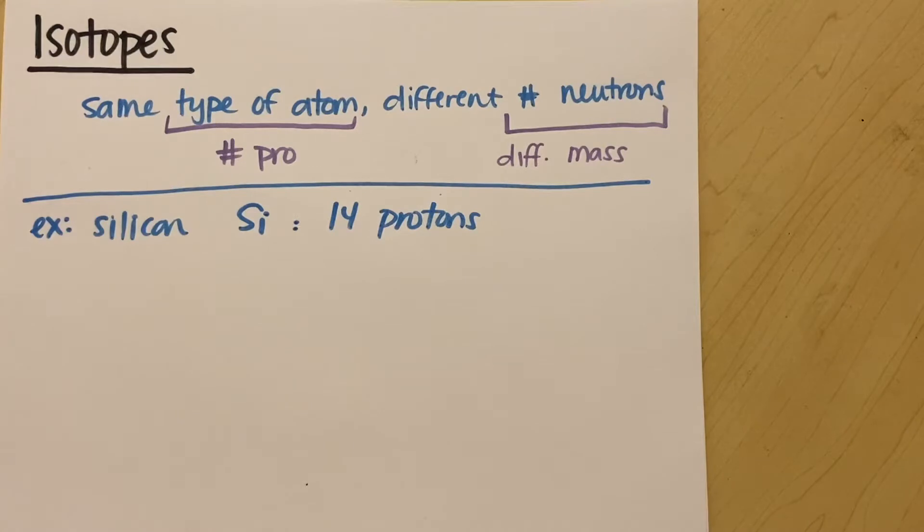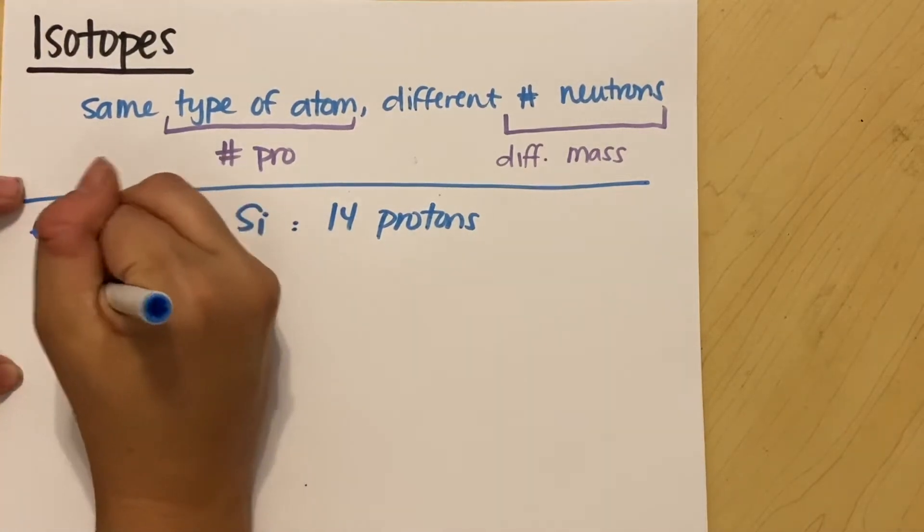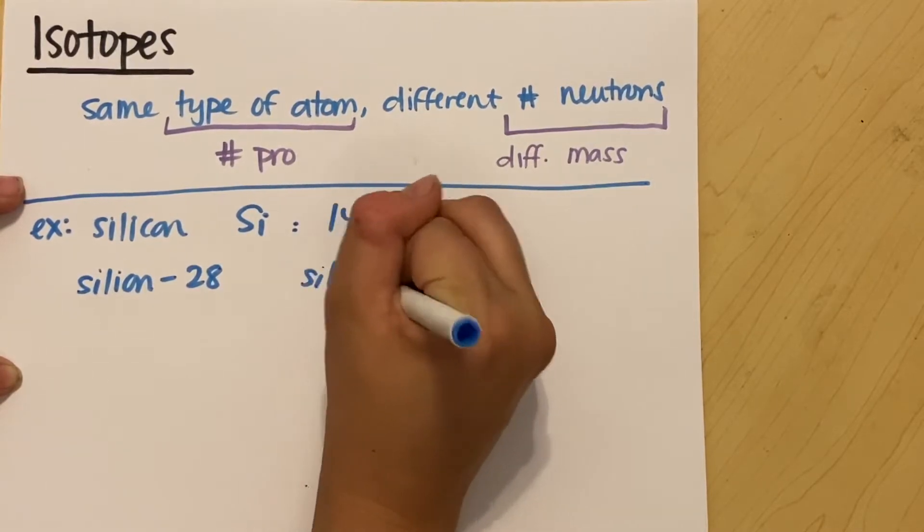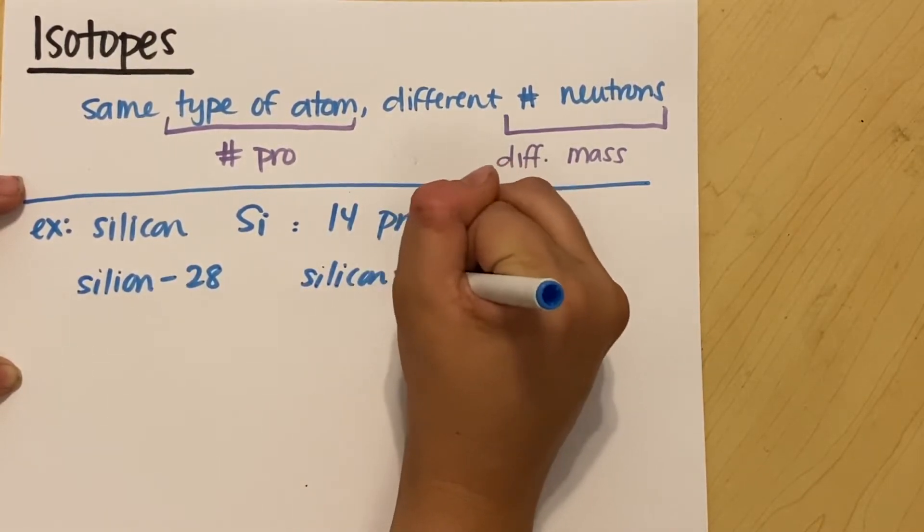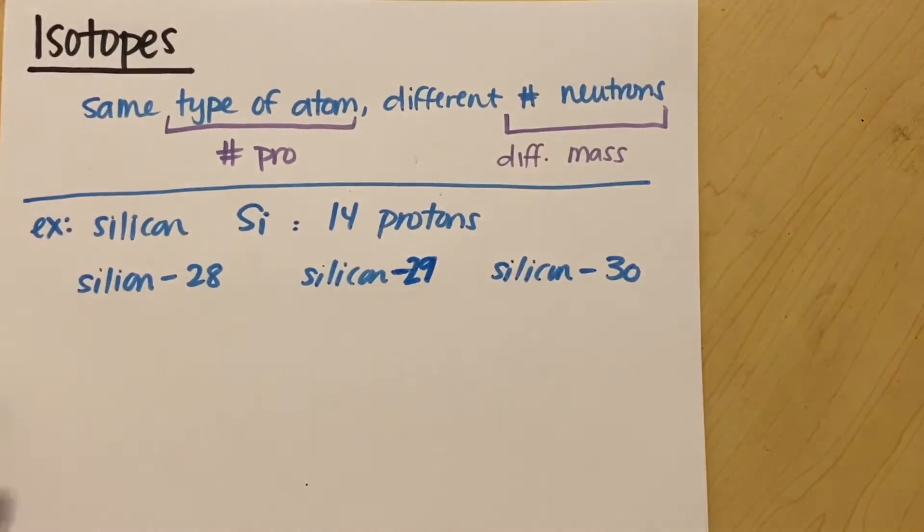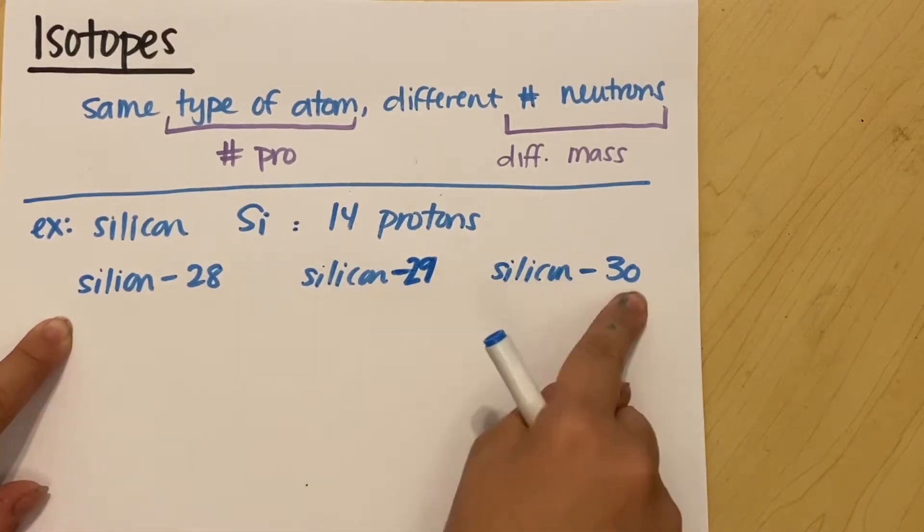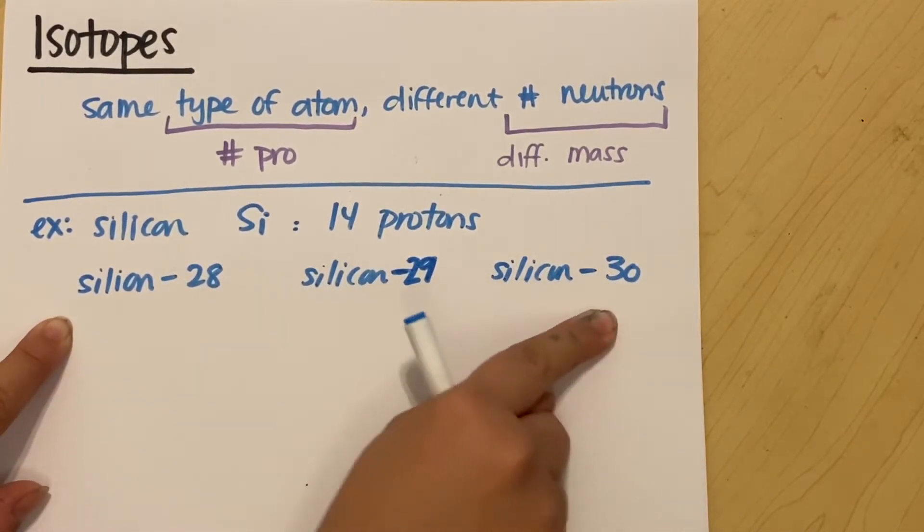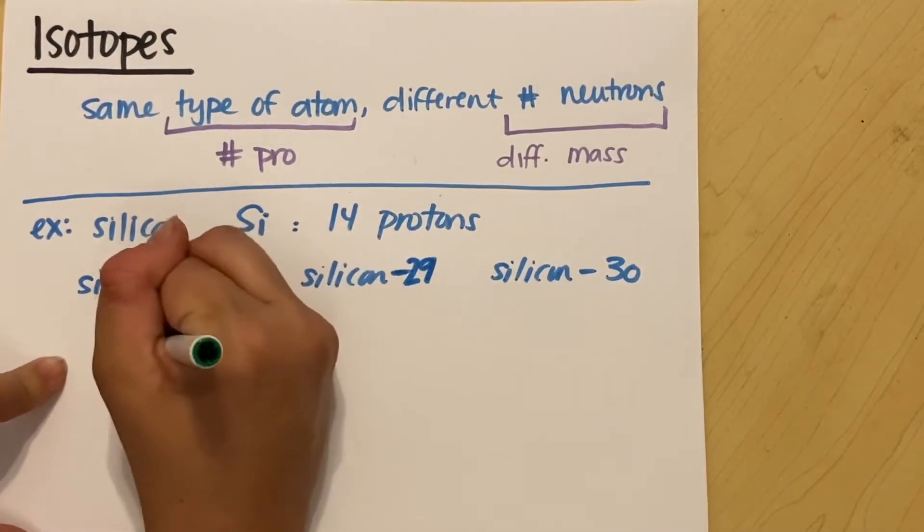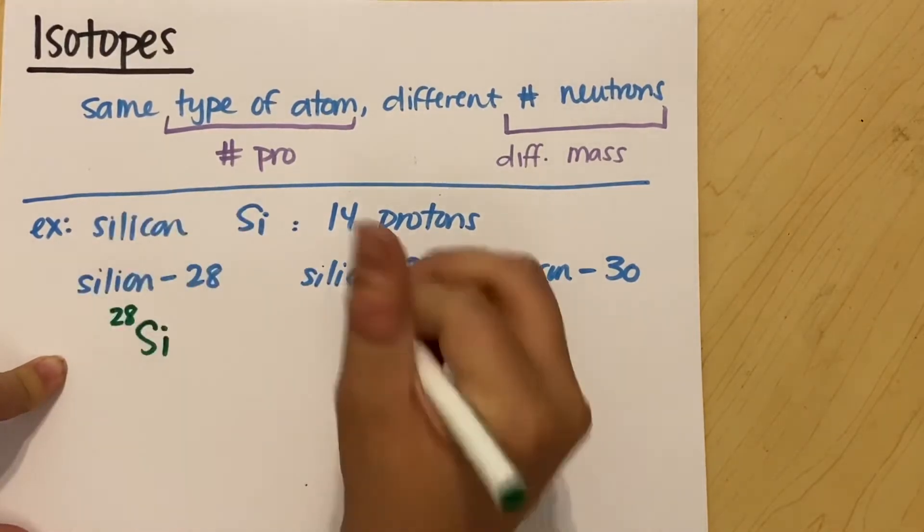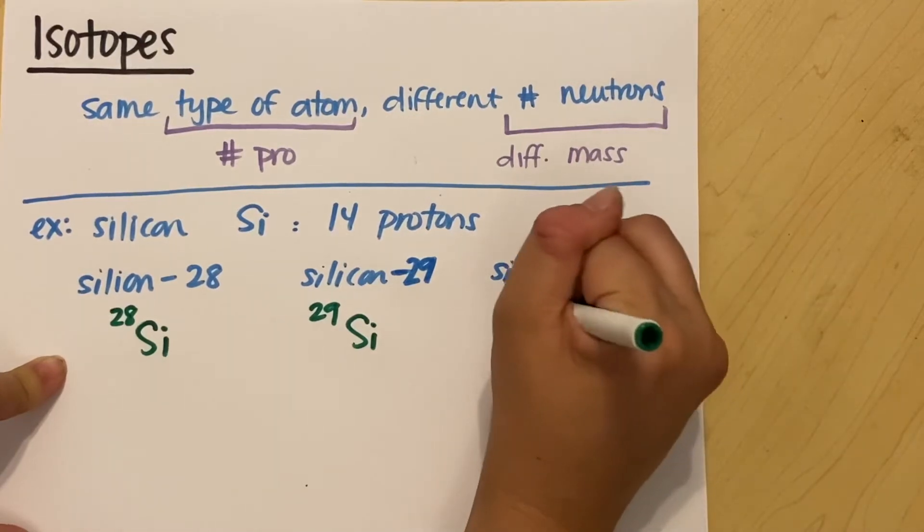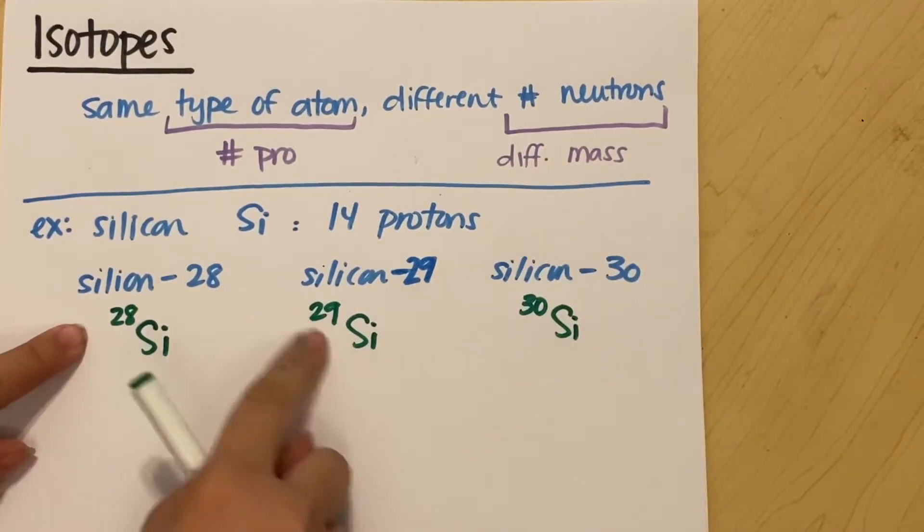But I have multiple different isotopes of silicon, meaning I have different amounts of mass for these different types of silicon. So I can have silicon-28, silicon-29, and silicon-30. So I have three different isotopes, three different masses. So I could write that as my complete elemental symbol. So Si with a 28 up top, Si with a 29 up top, or Si with a 30 up top, just showing me my different masses.